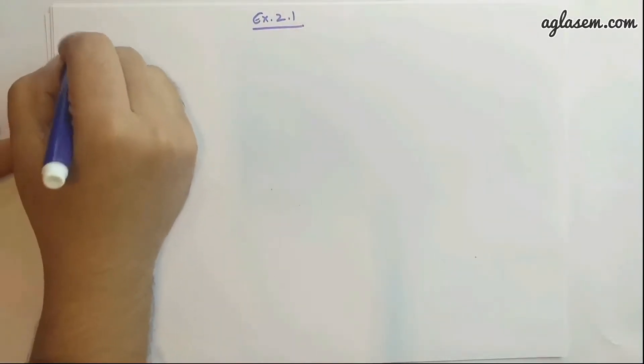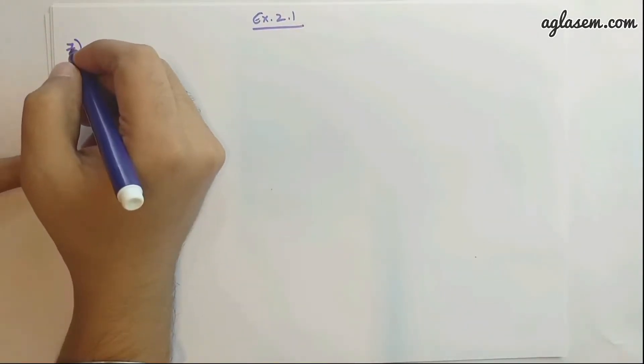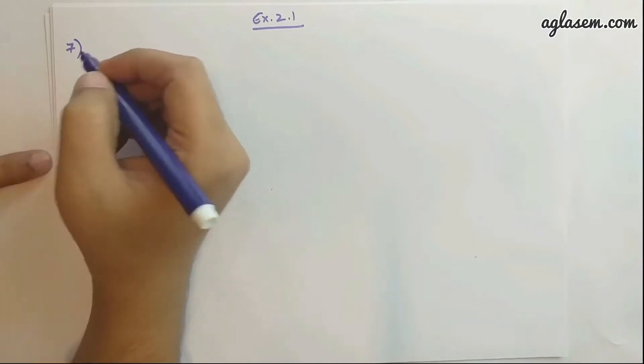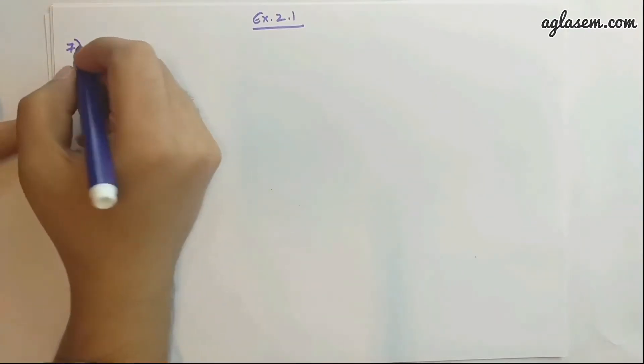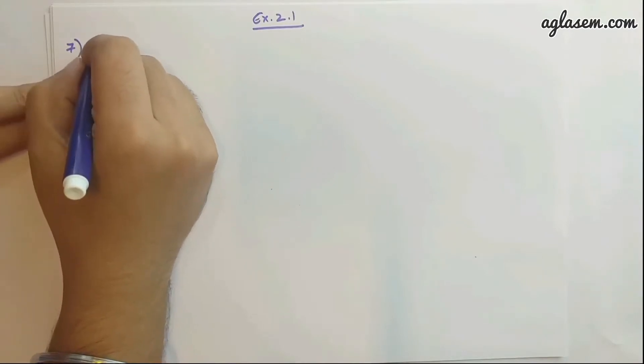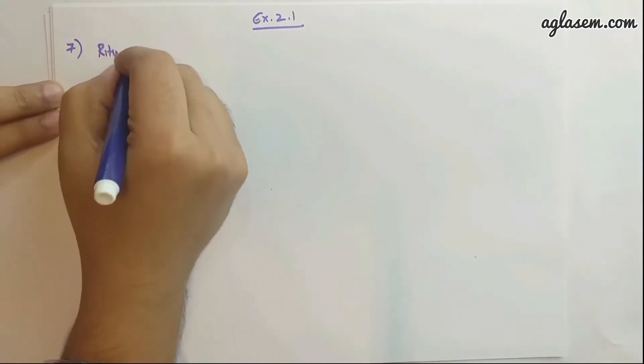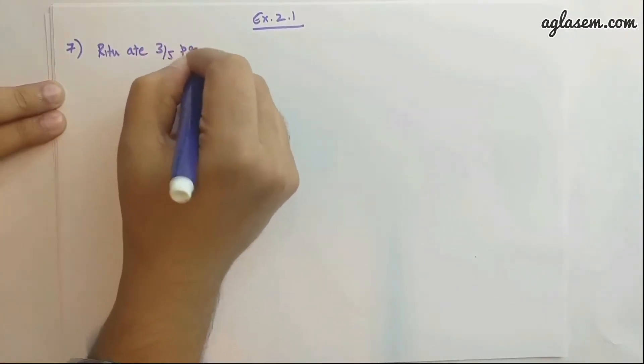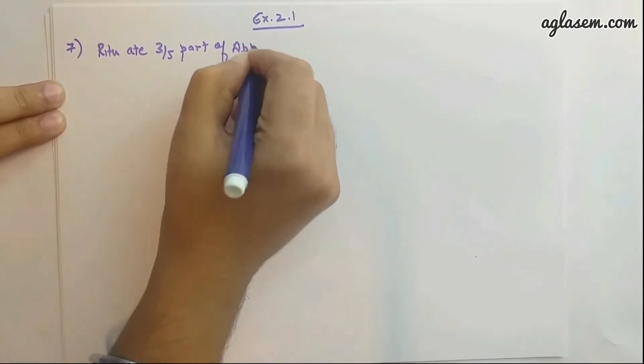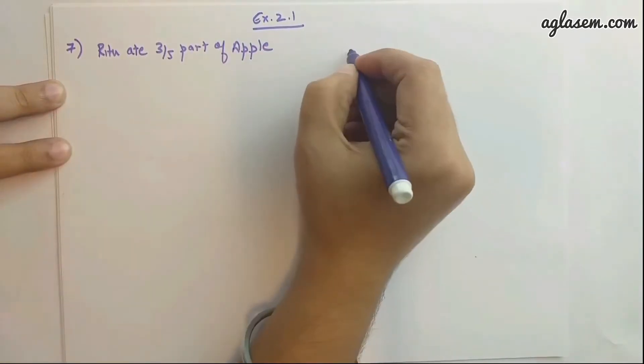Question 7 says: Ritu ate 3/5 part of an apple and the remaining apple was eaten by her brother Somu. How much part of the apple did Somu eat? Now, see what is happening here. Ritu had some apple and ate 3/5 part of apple. What does this mean? If there is one apple...